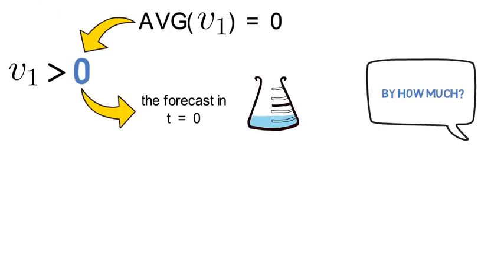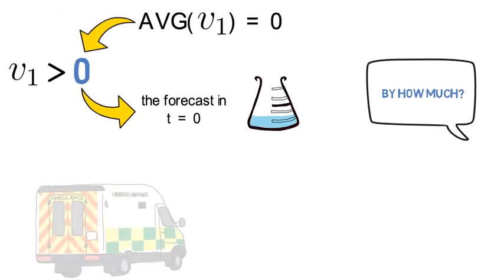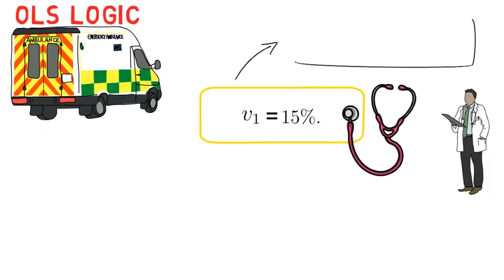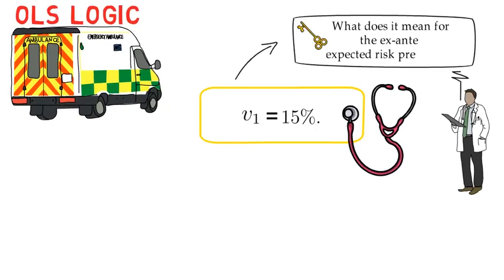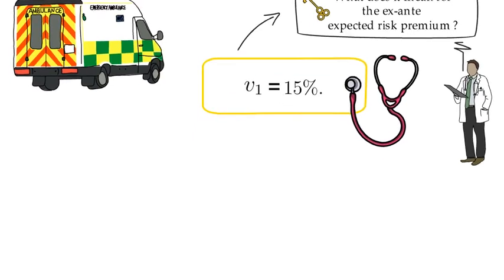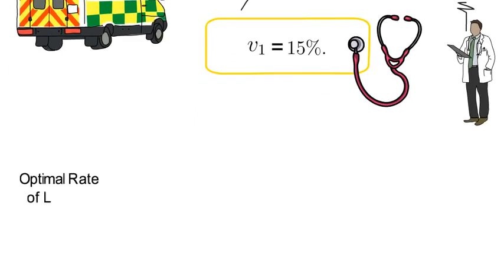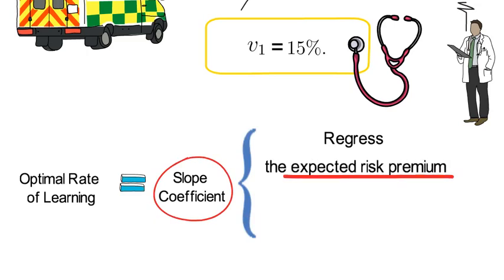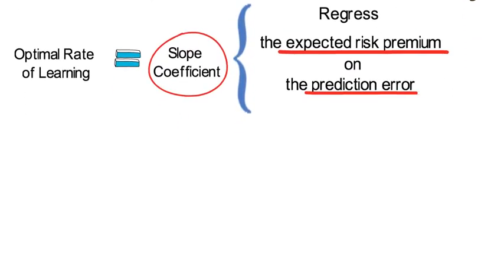Kalman argues that this question can be answered with plain OLS logic. The key question is what can we learn about the ex-ante expected risk premium from that realized 15% prediction error? Kalman derives that the optimal rate of learning should be the slope coefficient that you obtain when you regress the expected risk premium onto the prediction error. The slope coefficient has the well-known expression of a covariance term over the variance.